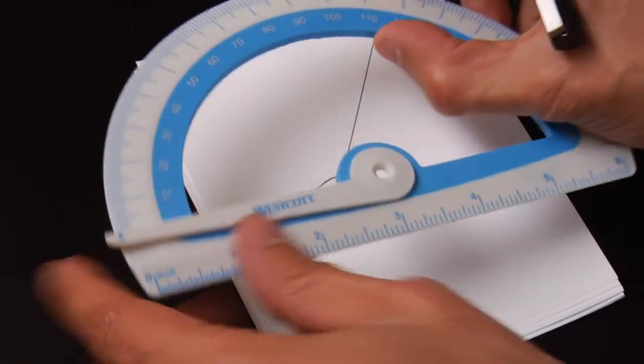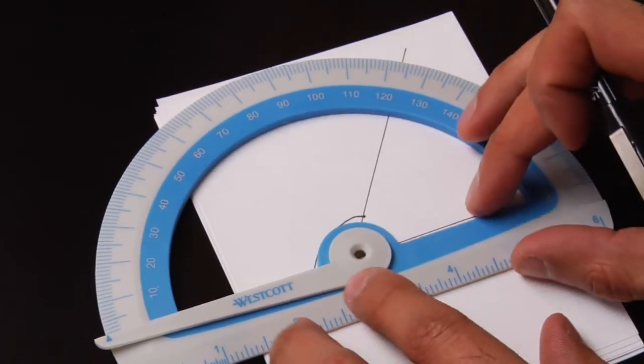So what we do is we take our protractor, we put it on the dot in the center.